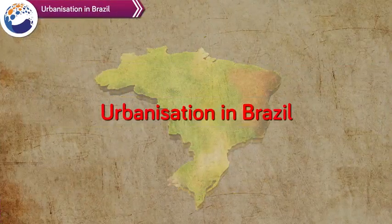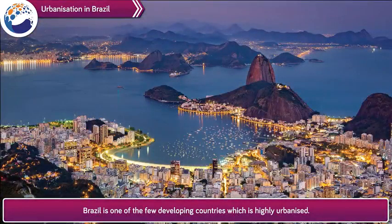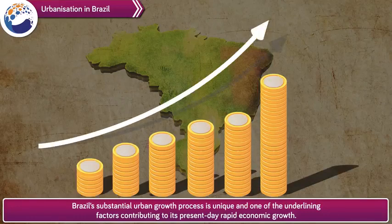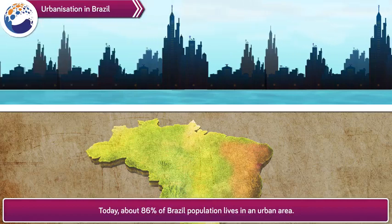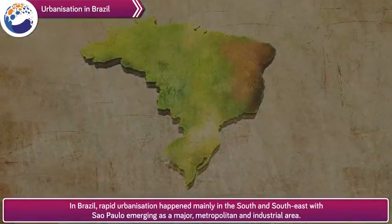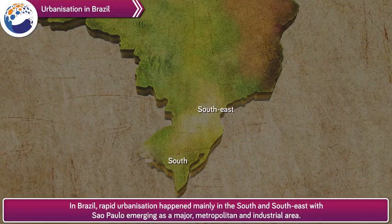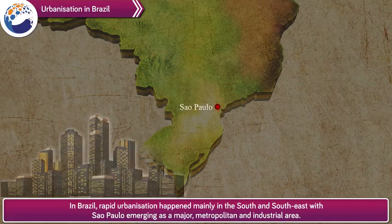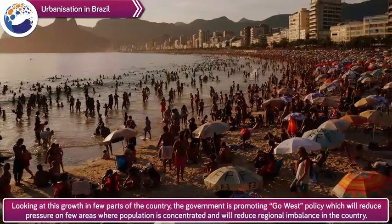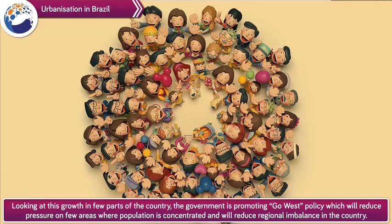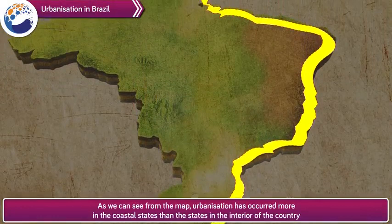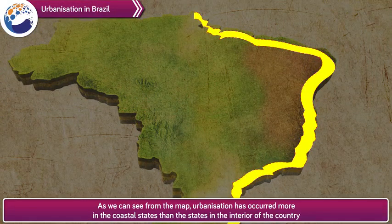Urbanization in Brazil. Brazil is one of the few developing countries which is highly urbanized. Brazil's substantial urban growth process is unique and one of the underlying factors contributing to its present-day rapid economic growth. Today, about 86% of Brazil's population lives in an urban area. Rapid urbanization happened mainly in the south and southeast, with São Paulo emerging as a major metropolitan and industrial area. The government is promoting a Go West policy which will reduce pressure on few areas where population is concentrated and will reduce regional imbalance in the country. As we can see from the map, urbanization has occurred more in the coastal states than in the states in the interior of the country.